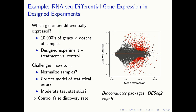This is an example of the type of problem that Bioconductor might be used for. It involves RNA-seq data generated to assess differential gene expression in a designed experiment. Each point in the figure represents a gene. There are tens of thousands of genes, and the level of expression of each gene has been measured across dozens of samples.